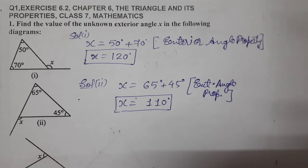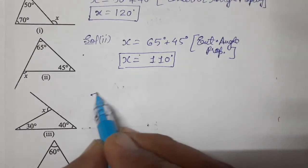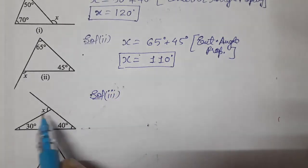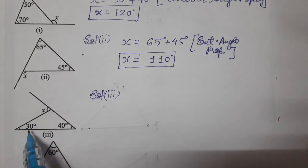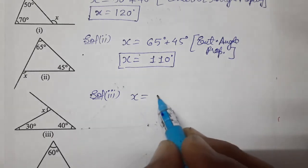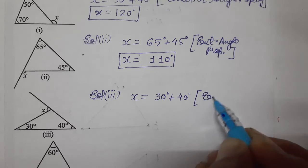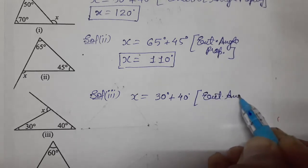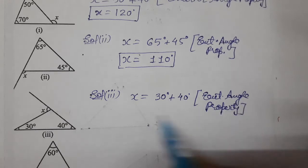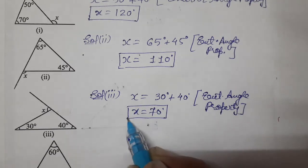Now we'll do the third one. All questions are the same — only the exterior angle changes every time. For solution three, the exterior angle equals the sum of the interior opposite angles. So X equals 30° plus 40°, by the exterior angle property. 30 plus 40 is 70, so X equals 70°.